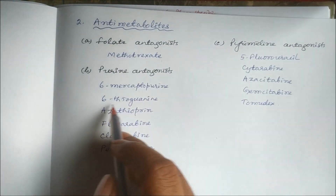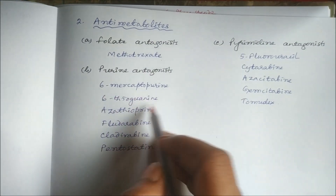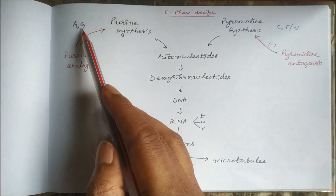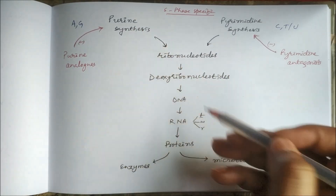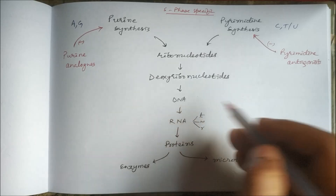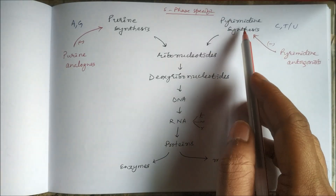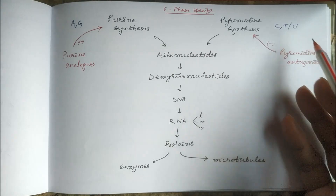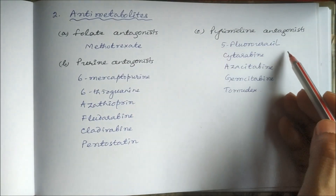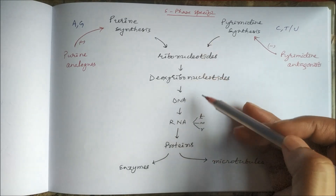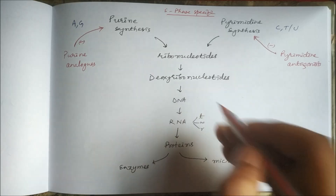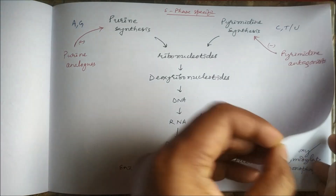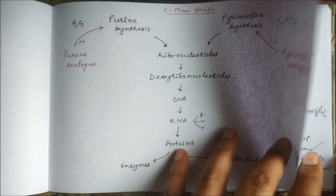Purine analogues — analogues of adenine and guanine — for example 6-mercaptopurine or 6-thioguanine. 6-thioguanine is an analog of guanine, so in place of guanine, 6-thioguanine will act, causing abnormal DNA synthesis. Similarly, pyrimidine analogues — for example, if 5-fluorouracil is used in place of uracil, it also inhibits DNA synthesis. This abnormal DNA synthesis causes apoptosis.